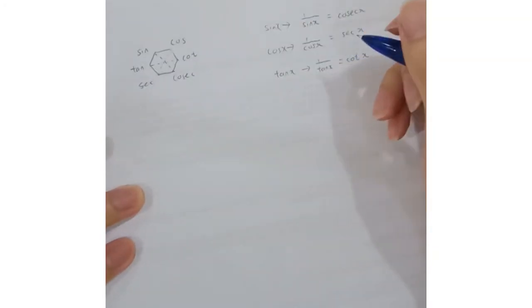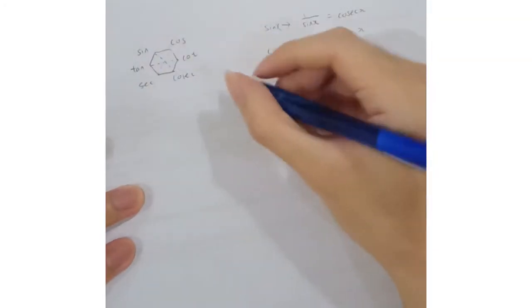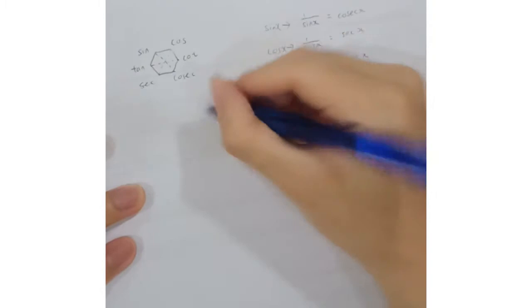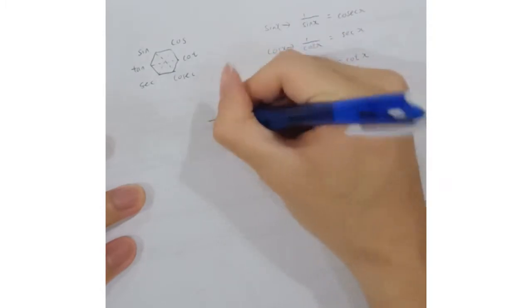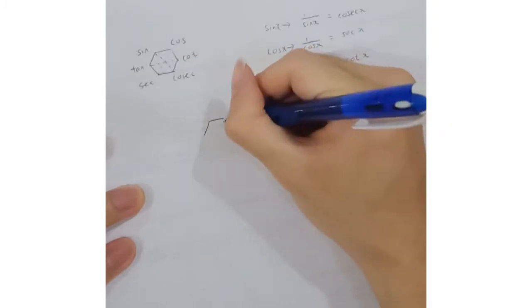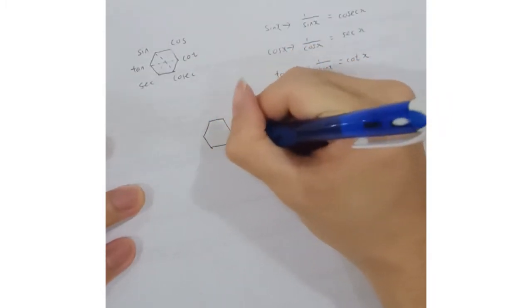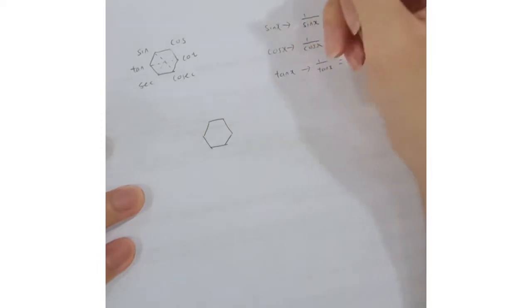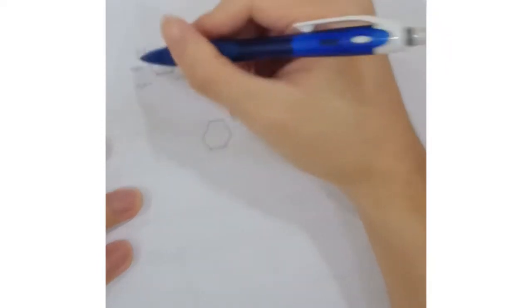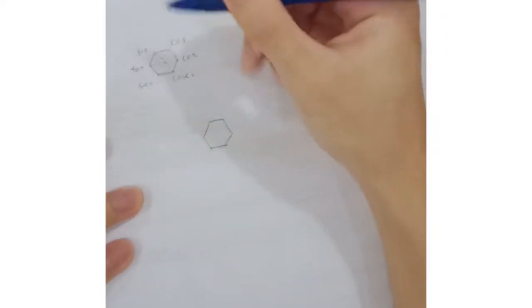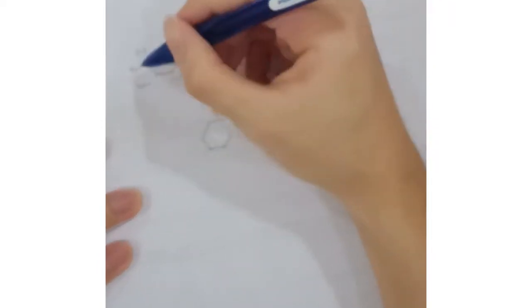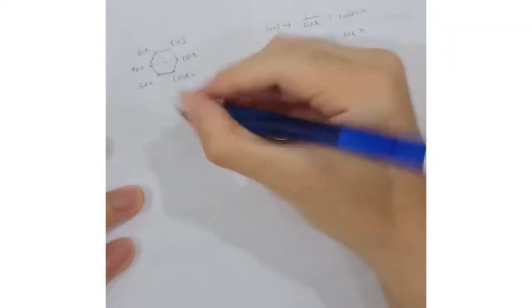I will show you how to draw it. A hexagon consists of six sides. We must write out the formulas: tangent, sine, and cos.